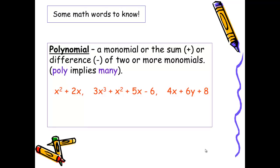A polynomial can be a monomial or it can be the sum or difference of two or more monomials. Poly means many. So the term polynomial can include an expression with just one term, such as a monomial, or a hundred terms. Here are several examples. Please include at least one of them in your notes.